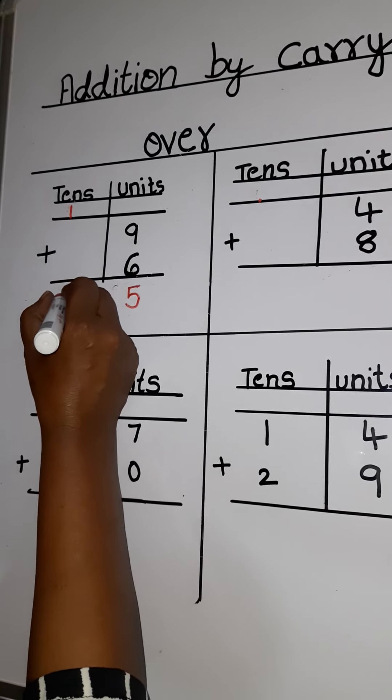Now we come to the next sum. Observe carefully. 4 plus 8. 4 plus 8 equals to 12. You cannot write 12 under unit's place. Only single number can be written up to 9. So now what to do?